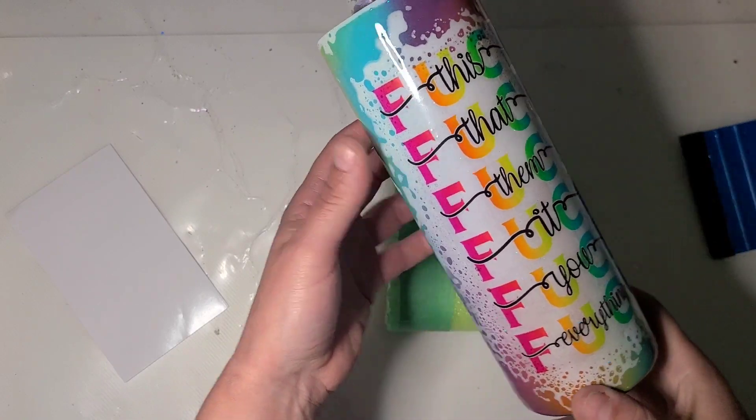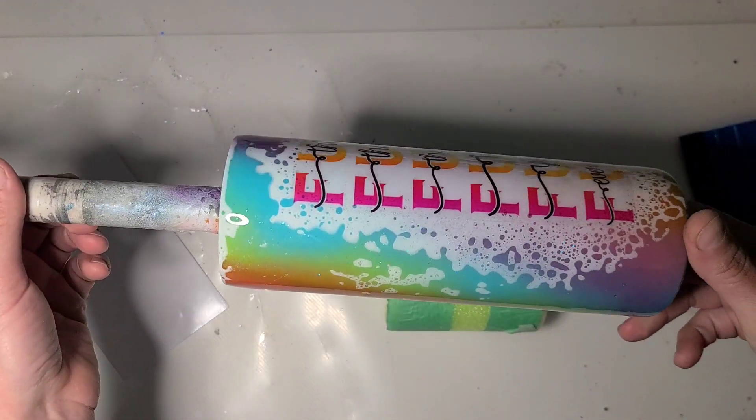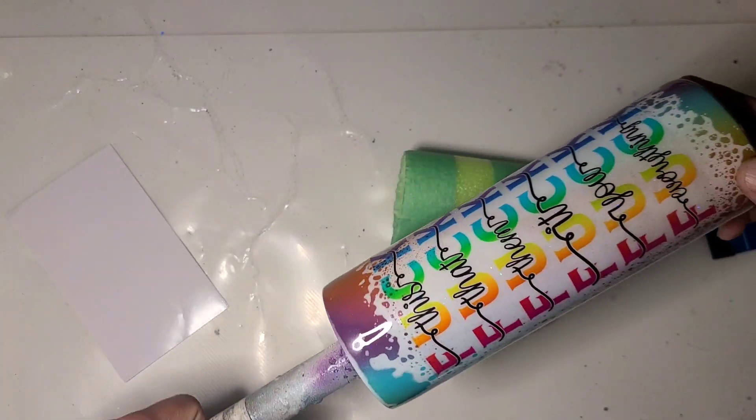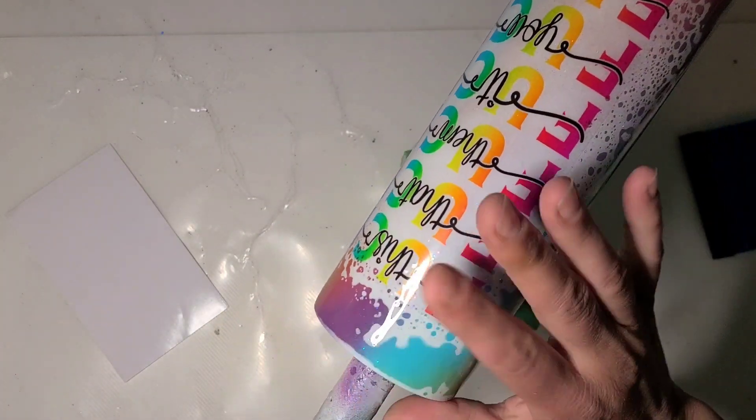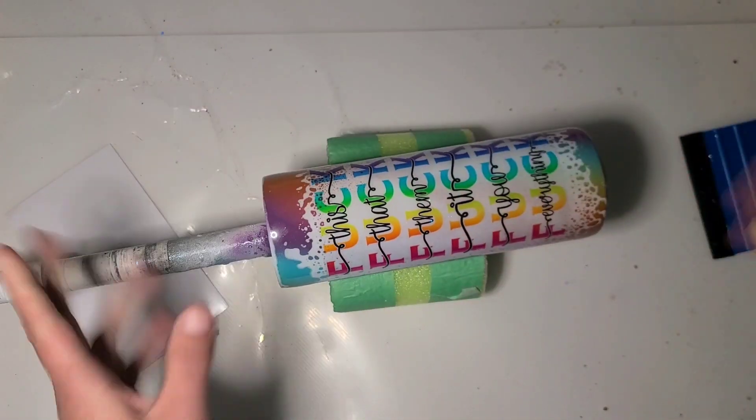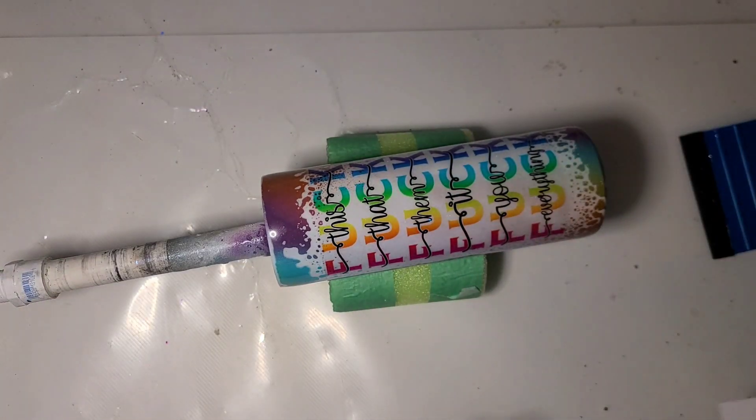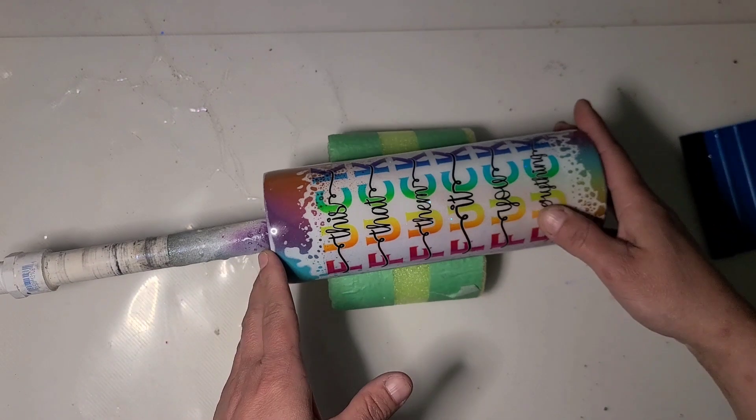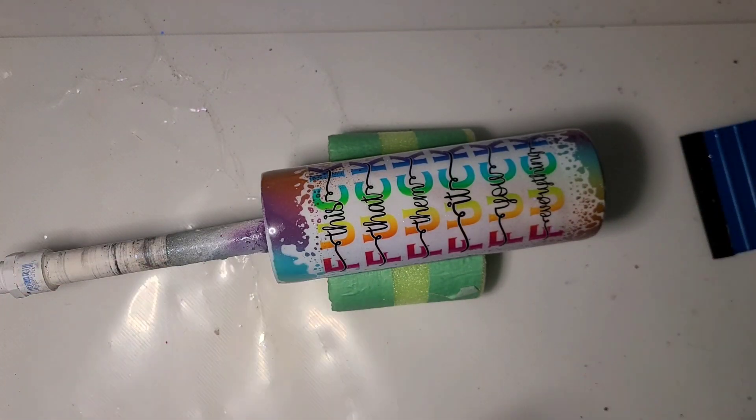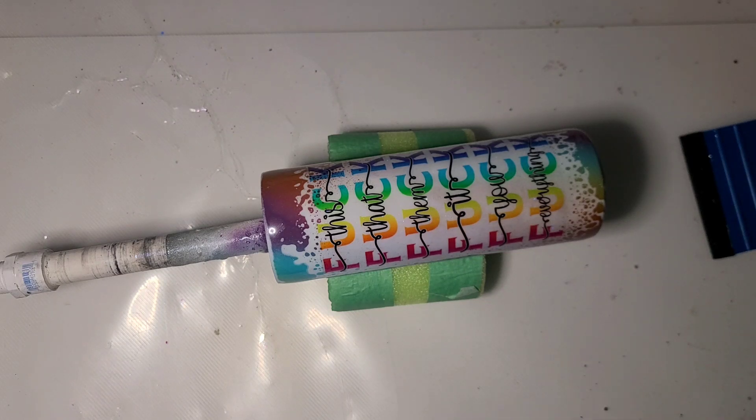I'm going to get this back over to the turner, and we will get some epoxy on it in a minute here, but that is it for this step. Yes, I know I could print this myself on Waterslide or my own clear printable vinyl, but sometimes it's nice to just have something ready to go. So, that's where these clear cask decals really come into play.